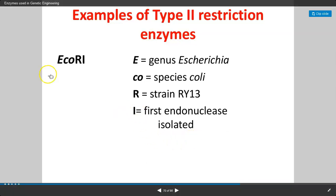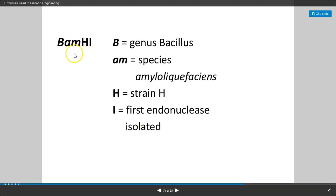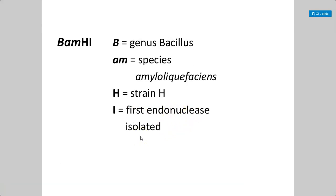Now let's see examples of Type 2 restriction enzymes, since these are the most commonly available and used restriction enzymes in genetic engineering. ECO-R1: E is from the genus Escherichia, CO from the species coli, R is the strain, and Roman I means it is the first endonuclease purified from Escherichia coli. BAMH1: B is from the genus Bacillus, AM from the species amyloliquefaciens, H is the strain, and Roman I means it is the first endonuclease isolated from Bacillus amyloliquefaciens.